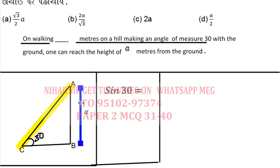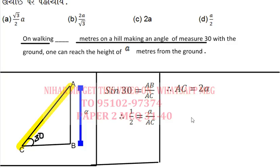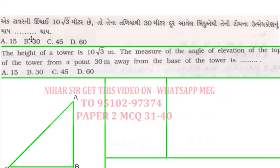Using sin 30: opposite side is AB and hypotenuse is AC. From the table value, AC is equal to 2A. So my correct option is C.